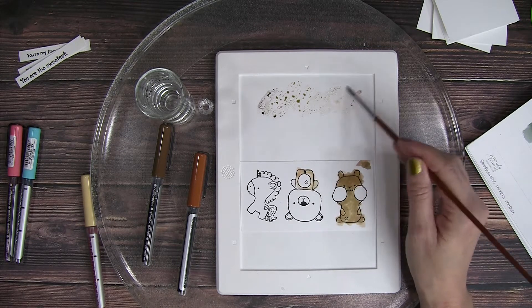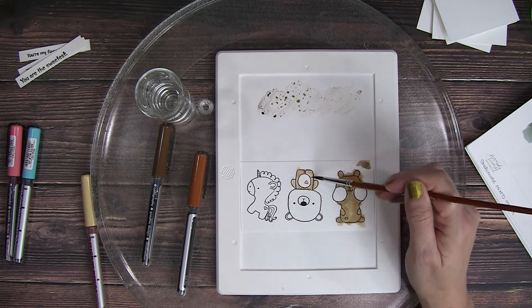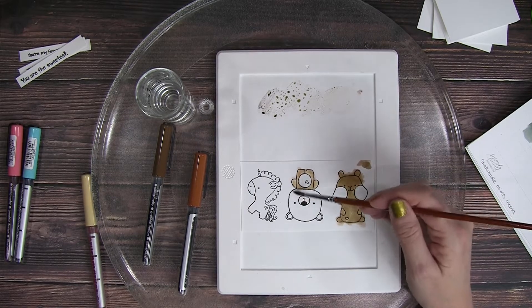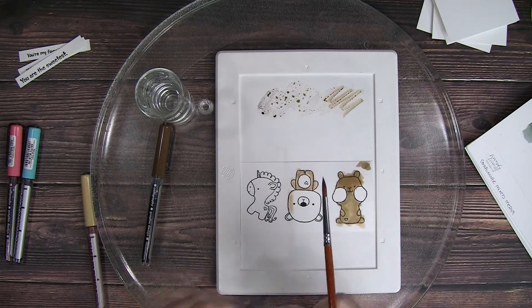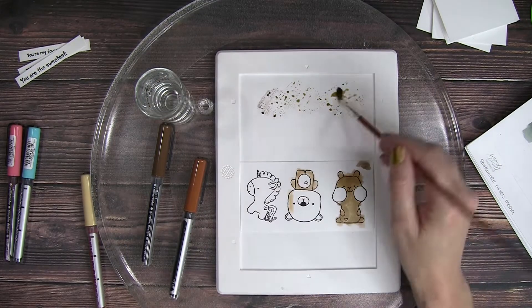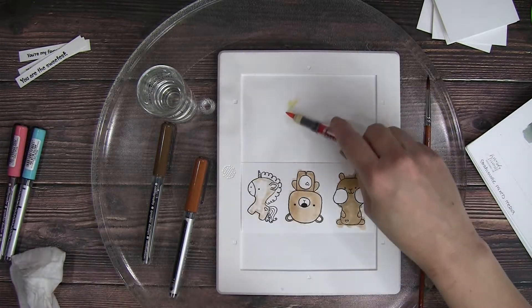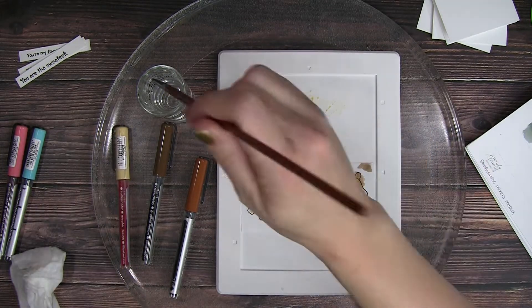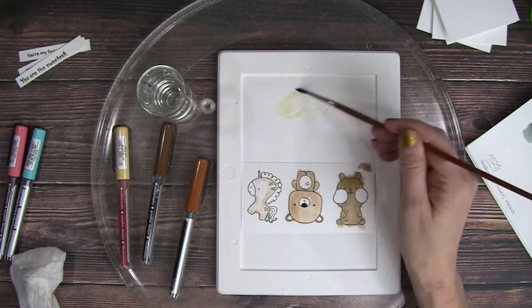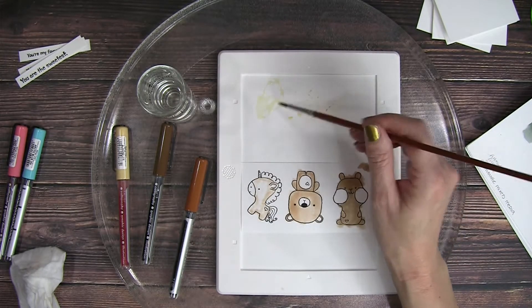I'm just coloring my chipmunk and my bear with that cinnamon color, and then just a hint of that praline just to kind of deepen it. Then I did a little bit of watercoloring on the unicorn.